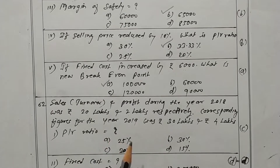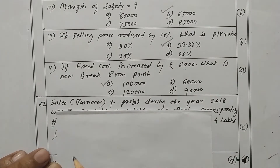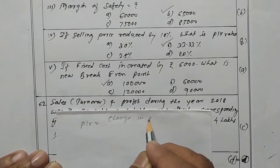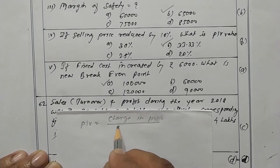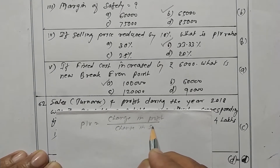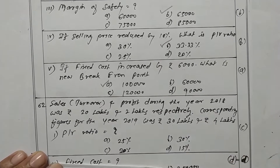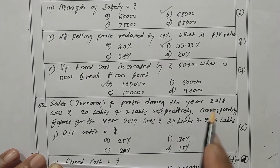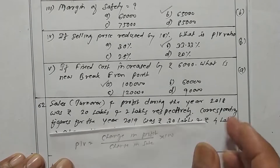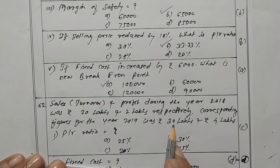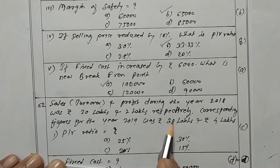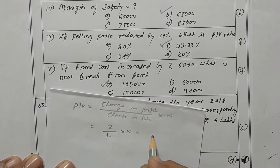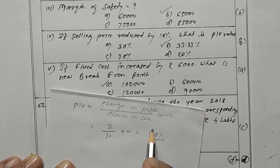What is the PV ratio? The formula for PV ratio is change in profit divided by change in sales, into 100. The 2019 profit is 4 lakhs and 2018 profit is 2 lakhs, so the change in profit is 2 lakhs. Change in sales is 30 lakhs minus 20 lakhs, which is 10 lakhs. So 2 lakhs upon 10 lakhs into 100 gives 20 percent as the PV ratio.